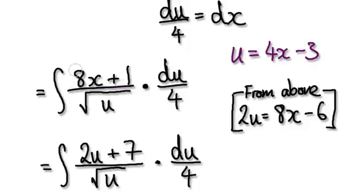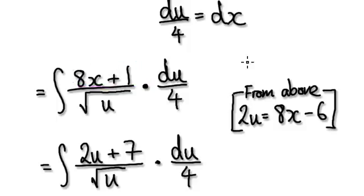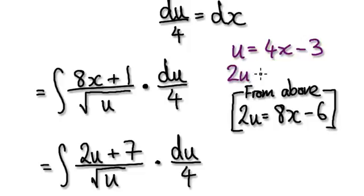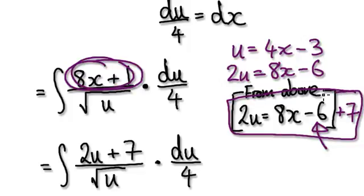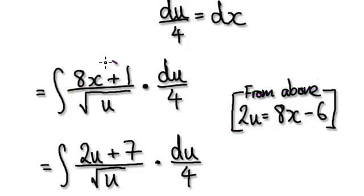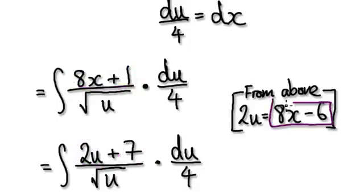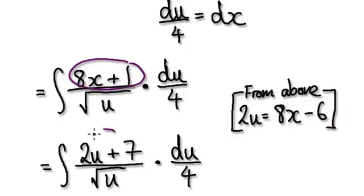At the moment we are here, but the thing is we don't want this x here. So rewrite this in terms of u. You see, u was 4x minus 3, so 2u must be twice this much, so it would be 8x minus 6. But this is what we want, so make the adjustment — add 7 to this. Then this whole thing will become this. So basically, this you can rewrite as 2u plus 7, because 2u is currently this, and if you add 7 it will give you this thing here. So rewrite this as 2u plus 7.